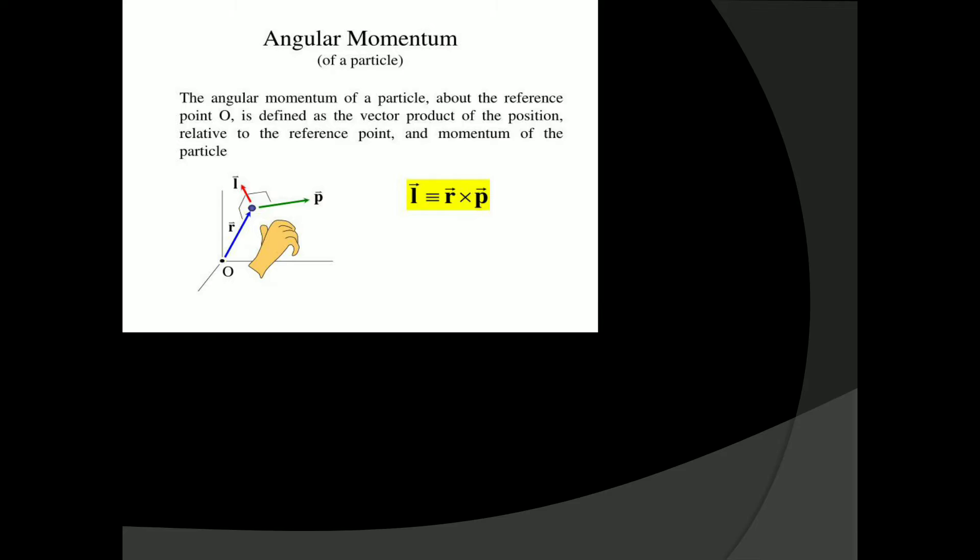Angular momentum of a particle about a reference point O. Suppose there is a particle present at a position — if you see a dotted point, that is an object or a particle — and it is at position R bar from point O. It is at a distance R bar from point O. O is the origin, or we can say it is a reference point.